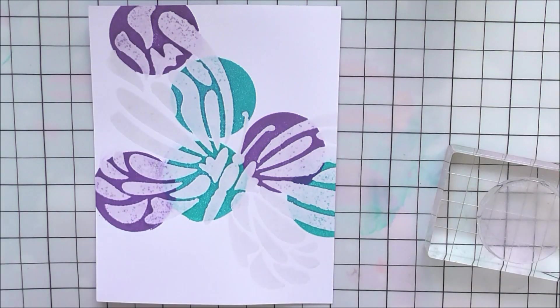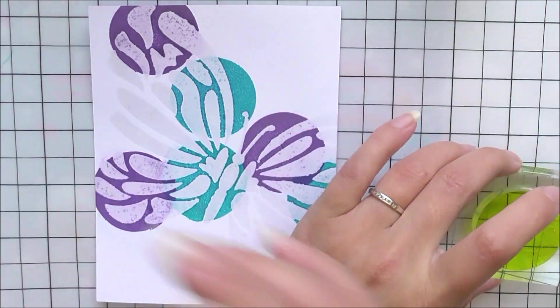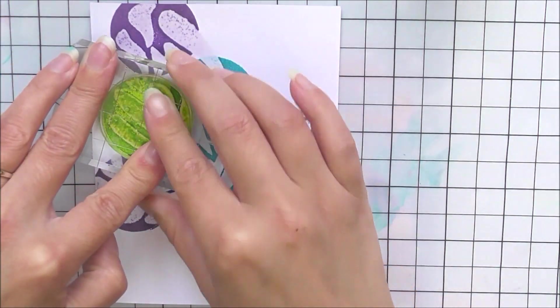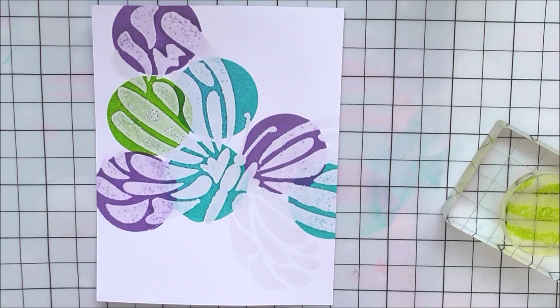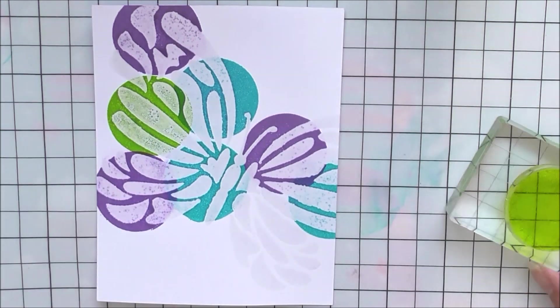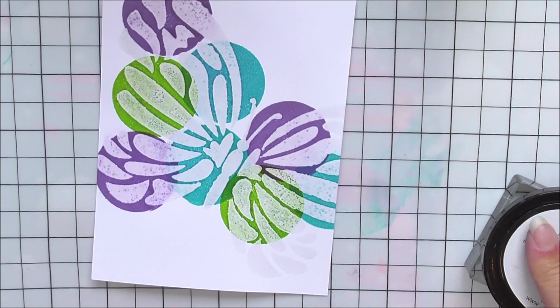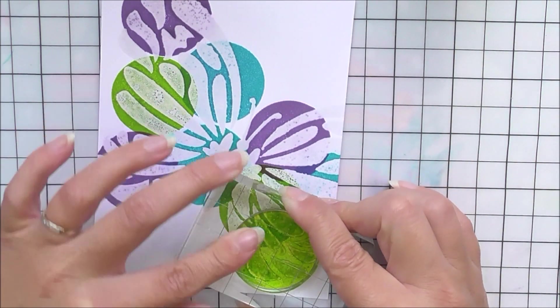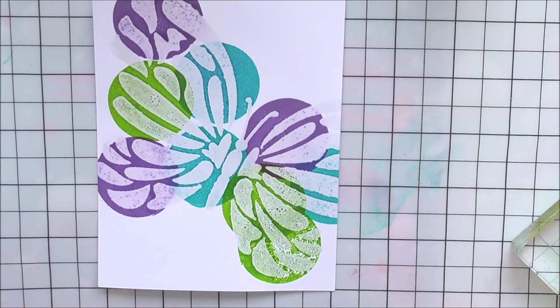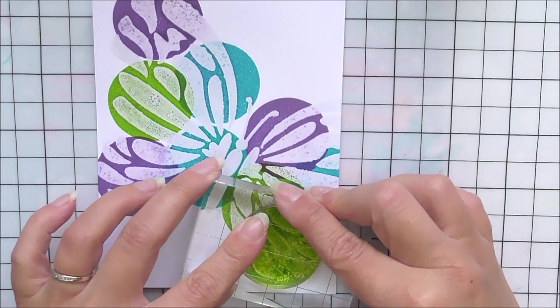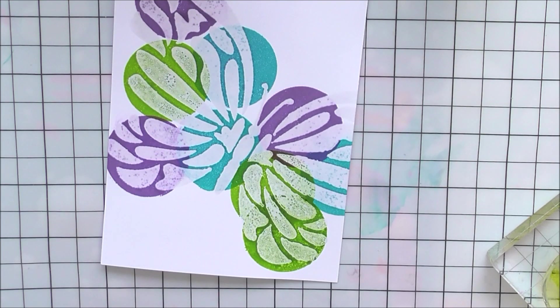Once I've cleaned my stamp off, I'm then going to move on to my green color. Again, I'm going to use that beautiful Parrot. I maybe should have used my Parrot second and then used my blue to kind of fill in all the rest of the gaps, because it doesn't necessarily stamp very well onto the purple. It kind of gives you a muddy color.